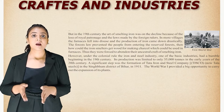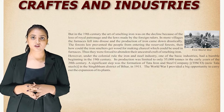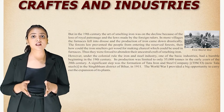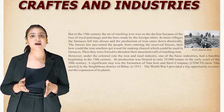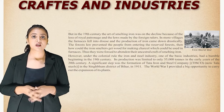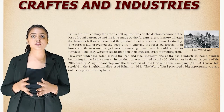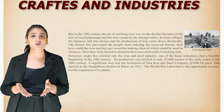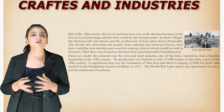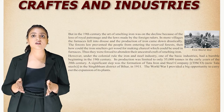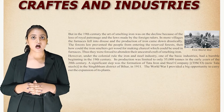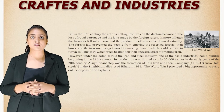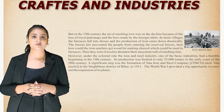In the 19th century, the art of smelting iron was on the decline due to loss of royal patronage and interference by foreign rulers. In many villages, furnaces fell into disuse and production of iron came down drastically. The forest laws prevented people from entering reserve forests, so iron smelters could not get wood to make charcoal for use in furnaces. They were thus forced to abandon their ancestral craft of smelting iron.